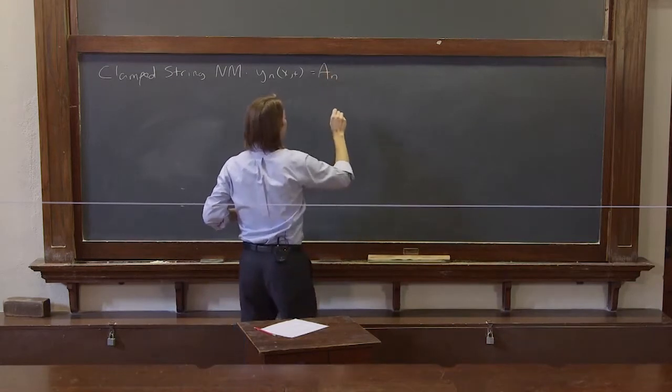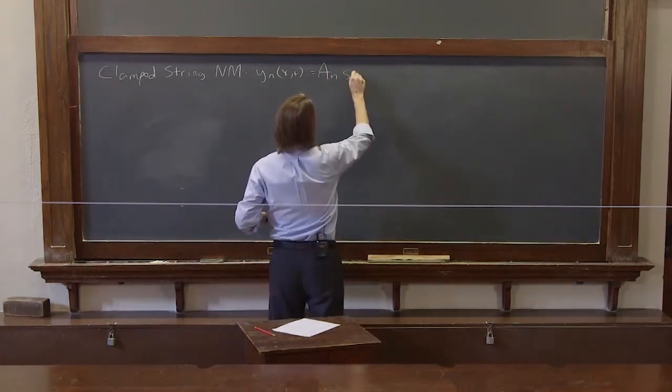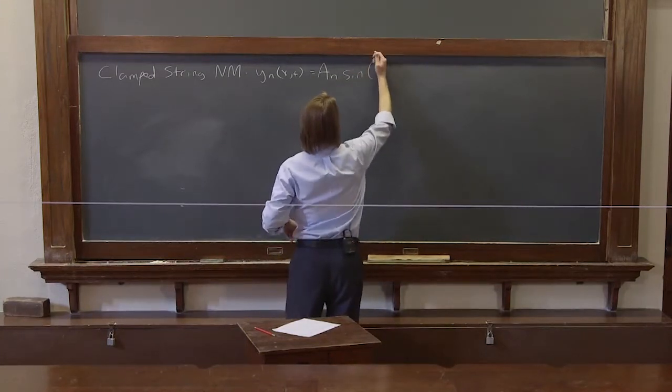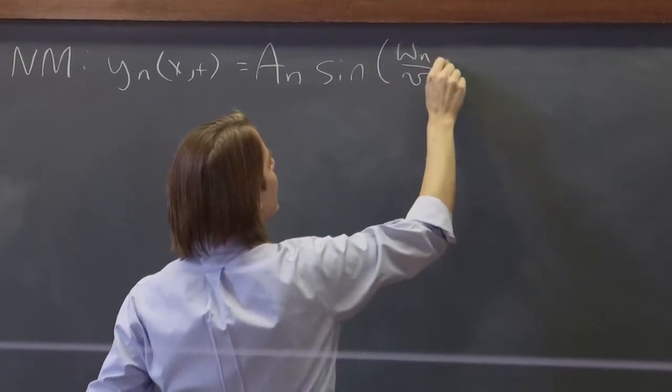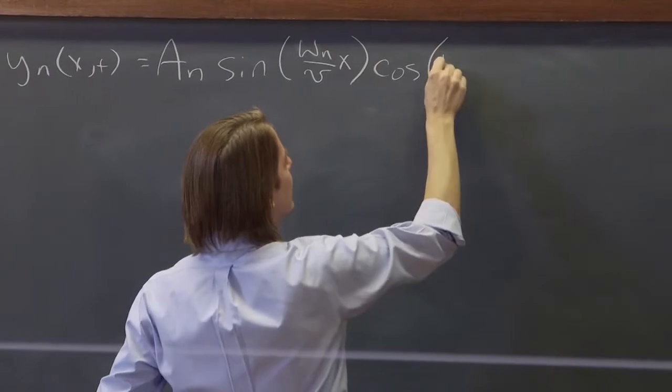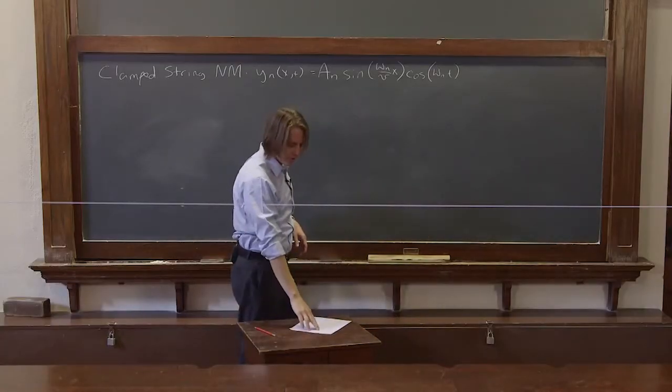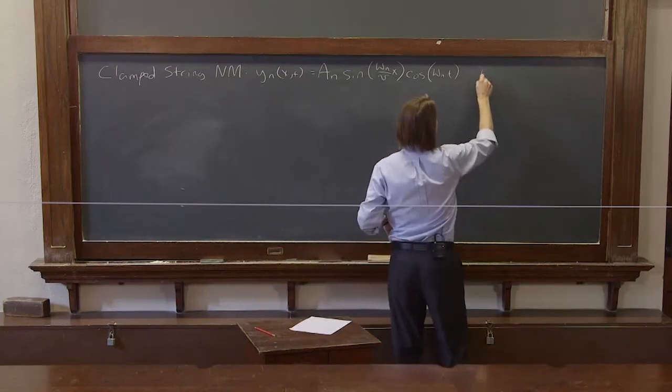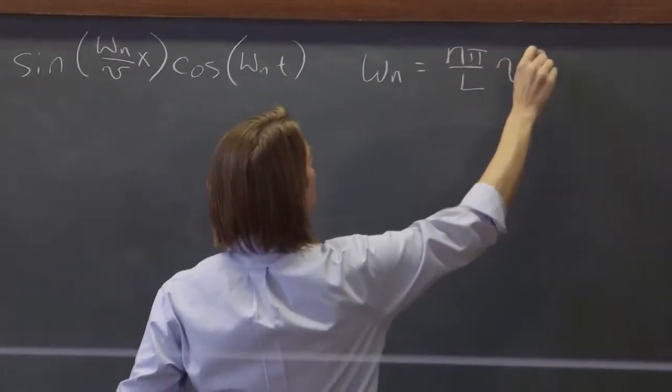They each can have their own amplitude. And we went with sine and cosine. Sine omega_n, that specific frequency, over v times x, times the cosine of omega_n t is how we were writing it. And we decided omega_n was n pi over L v.